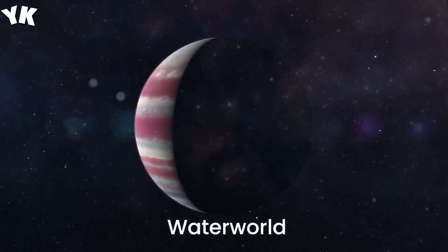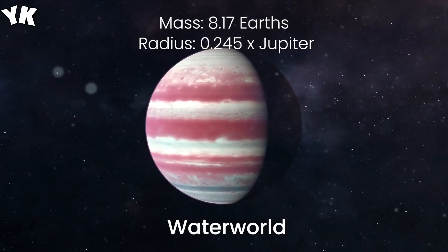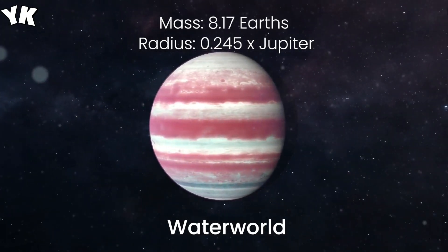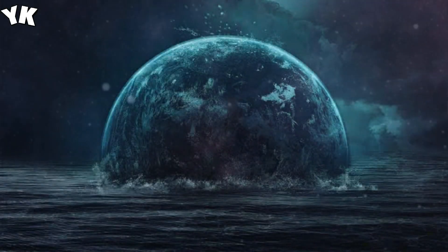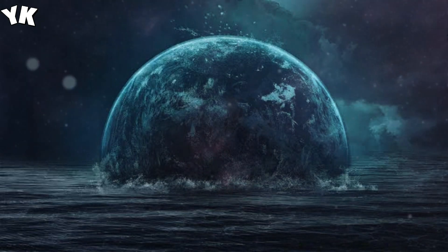Waterworld, G-J-1214B. Next, we're heading to a water-rich exoplanet known as the Waterworld. This Neptune-like planet is over 8 times Earth's mass, but boasts a bizarre, supercritical fluid atmosphere. Imagine a world with water in a state that's neither liquid nor gas.